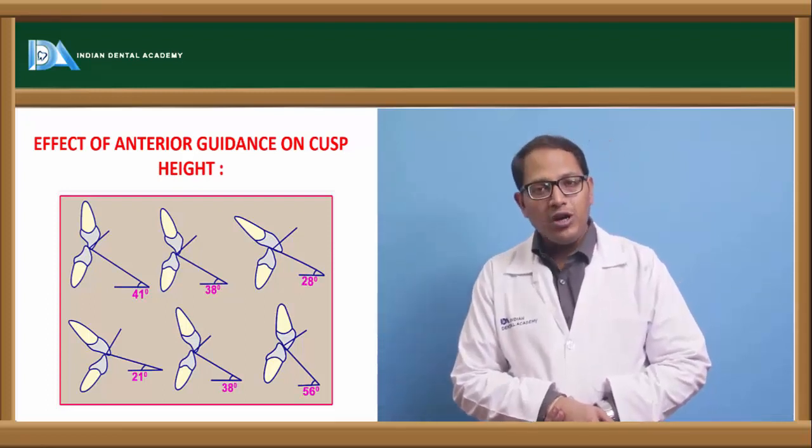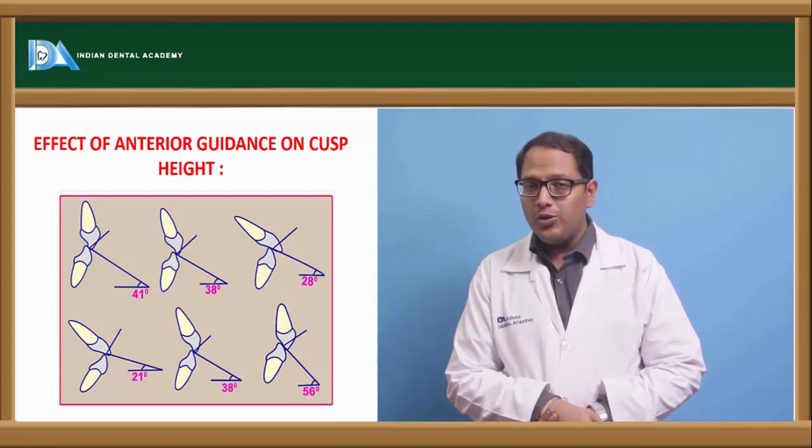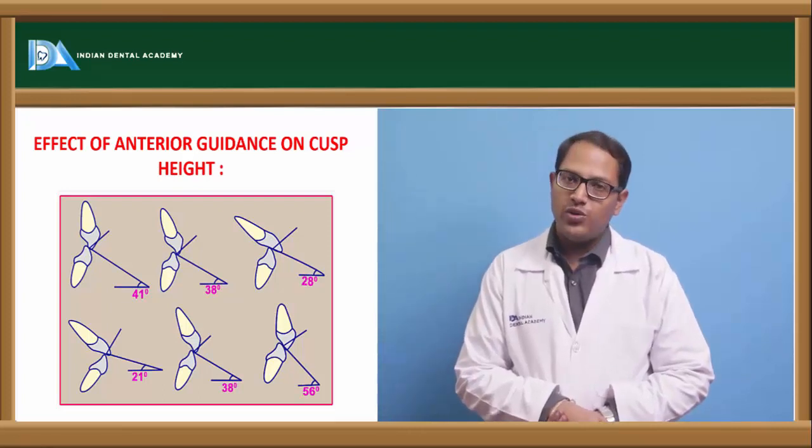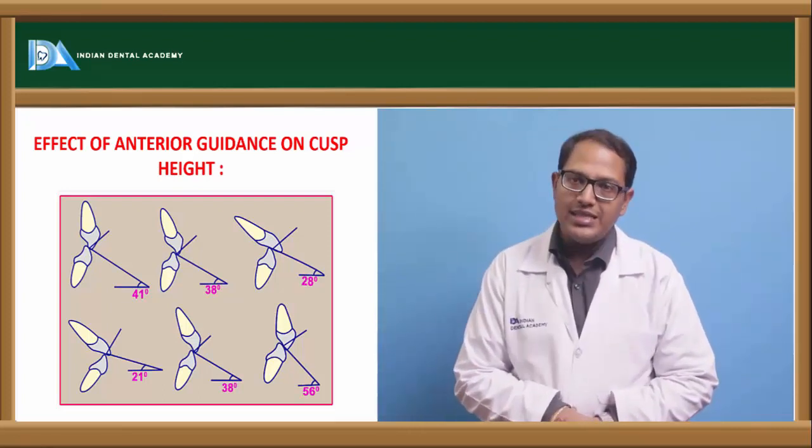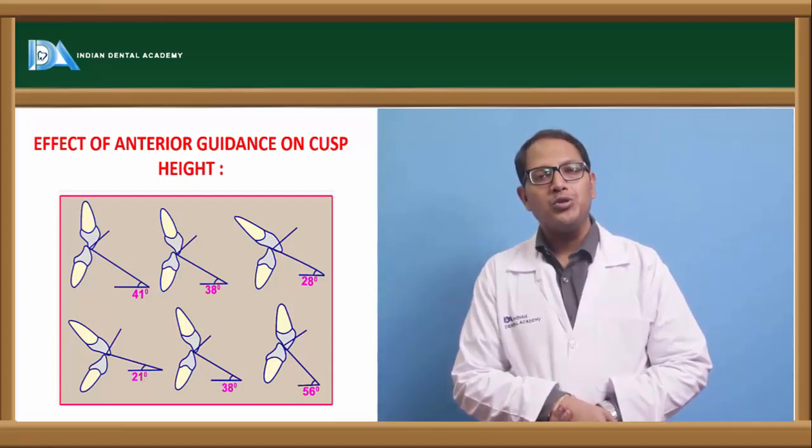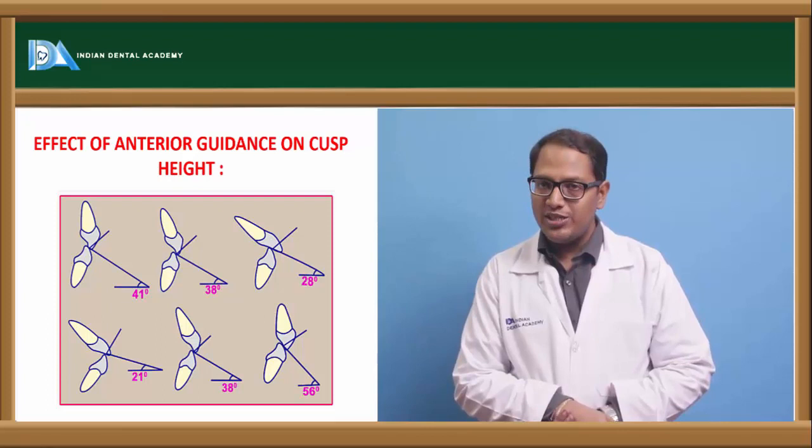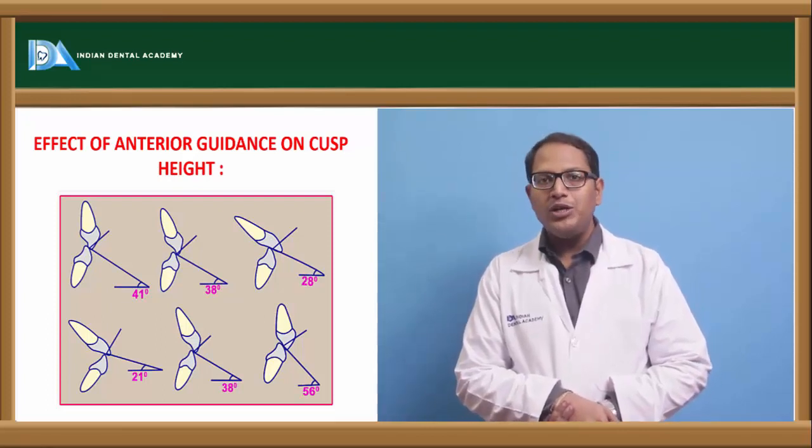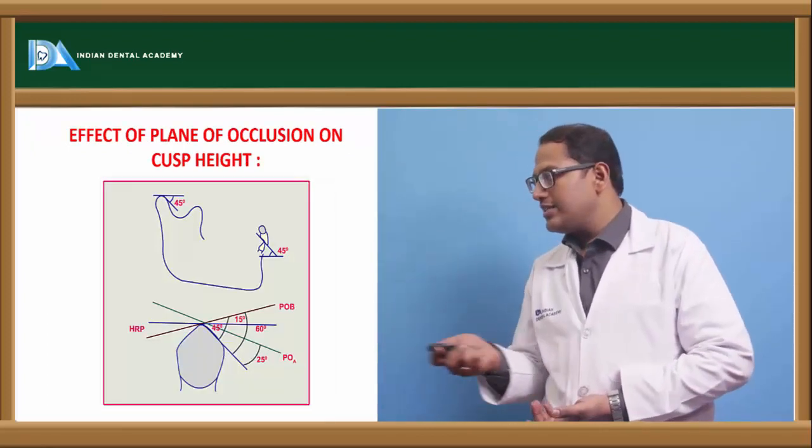If we do not follow all these things, what will happen? What will go at stake? That is Christensen's phenomenon in astral occlusion - posterior disocclusion when there are protrusive movements with the edge to edge bite in the central incisors. So that will go at stake, so we need to consider that.